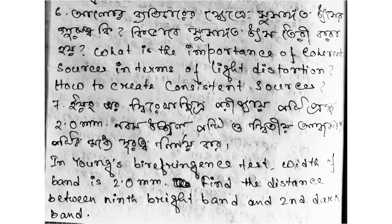Question 7: In Young's birefringent test, the width of the band is 2.0 mm. Find the distance between the 9th bright band and the 2nd dark band.